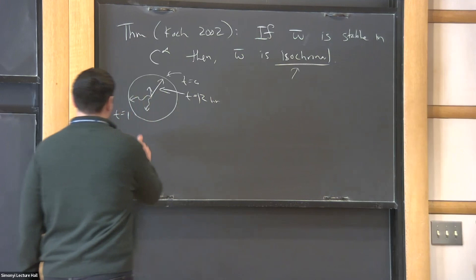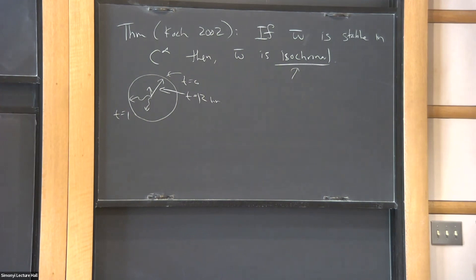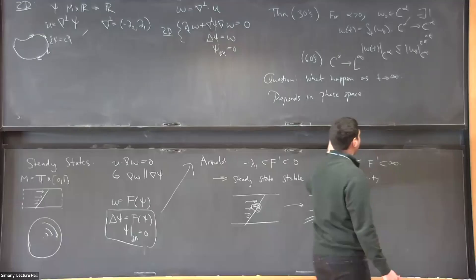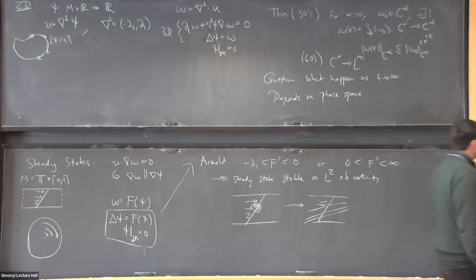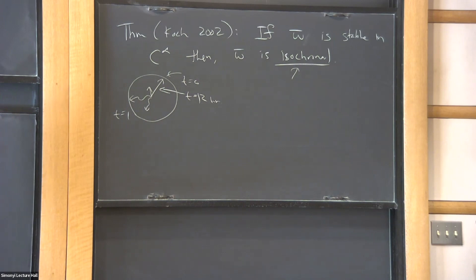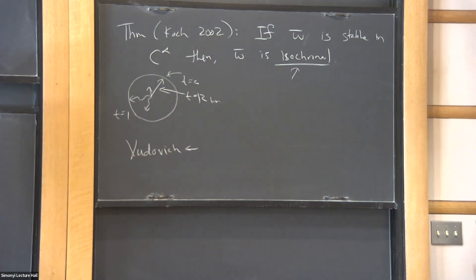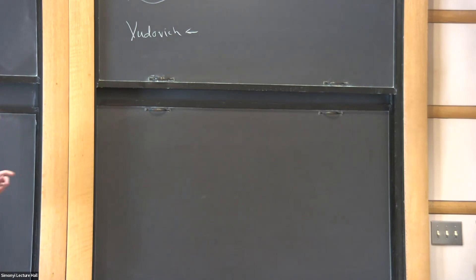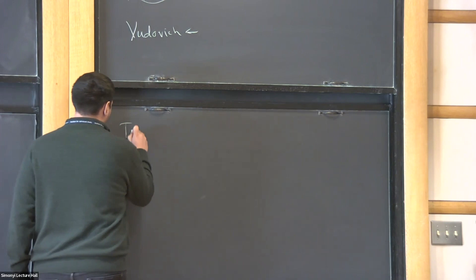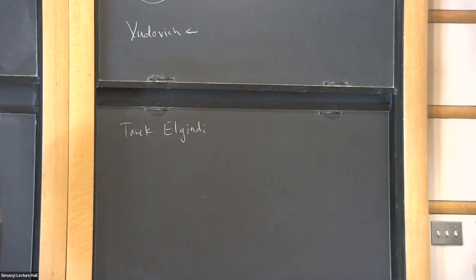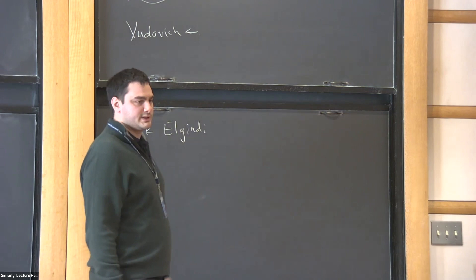There's a question. This theorem nevertheless says that most steady states, since most in a very clear sense are not isochronal, most steady states create small scales, even those that have these large scale persistent features. A natural question is, is it all steady states? Can you remove isochronal? Are these fluid clocks also unstable? The fact that all steady states should be unstable is something that Yudovich conjectured. The conjecture is that isochronal flows are also unstable in C^α. Everything unstable.